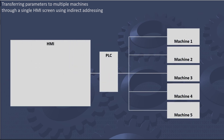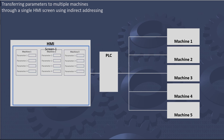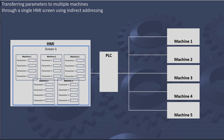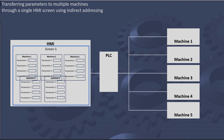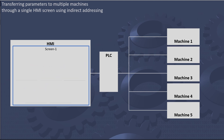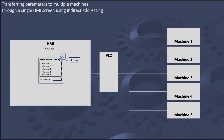Today, I am going to introduce a new video tutorial that will simplify your work and enhance efficiency in managing parameters across multiple machines. We will prepare a small program that demonstrates the power of indirect addressing in SCL. Whether you are dealing with 5 machines or a more substantial number, this technique will prove invaluable in transferring parameters seamlessly.